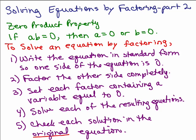To solve an equation by factoring, you want to write the equation in standard form so one side of the equation is zero. So by standard form, if it's a quadratic, that's AX squared plus BX plus C equals zero, or it could already be in factored form.